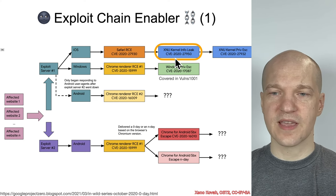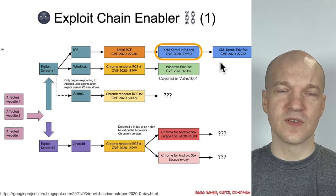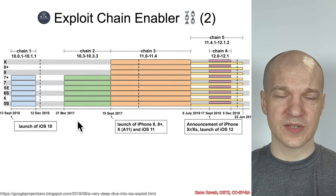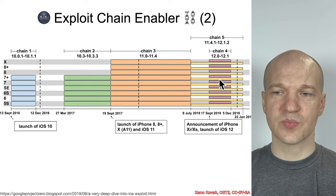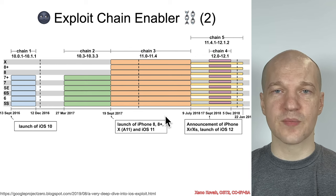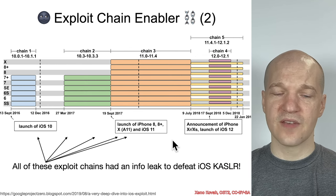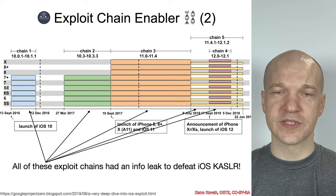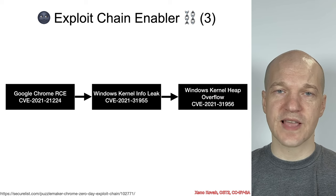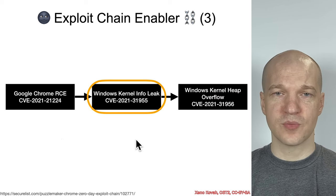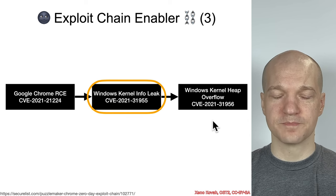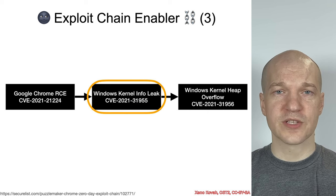In the case of iOS, before they could privilege escalate, they had to use an infoleak to defeat address-based layout randomization. And there were other Google Project Zero blog posts that looked at all sorts of different exploit chains for iOS across time — how long they lasted and which operating systems and phones they affected. For every single one of these exploit chains, it actually required an information disclosure as well. But it's not just iOS — it's any operating system. An infoleak may be an integral portion of an exploit chain to achieve privilege escalation.